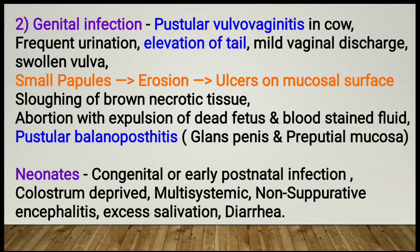In the genital infection form, pustular vaginitis in cows can be noted along with frequent urination, elevation of tail, mild vaginal discharge, and swelling of the vagina. Small papules are formed, which after erosion form ulcers on the mucosal surface. Sloughing of brown necrotic tissue can also occur, abortion with expulsion of dead fetus and blood-stained fluid, and pustular balanopostitis — inflammation of the glans penis and prepuce.